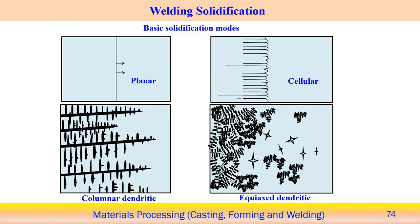Here you can see the basic solidification modes. It can be planar — the interface moves and creates a planar interface. Or it can be cellular, forming a cellular structure during the solidification front. Or you can create a columnar dendritic structure, where the dendritic arm exists in one particular direction with primary or secondary dendritic arms. It is basically a columnar structure, but within that columnar structure it creates different shapes of dendrites, which consist of secondary or tertiary dendritic arms.